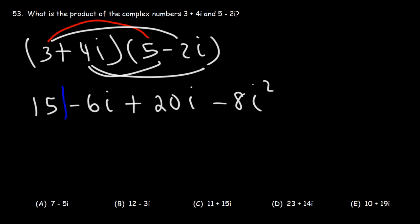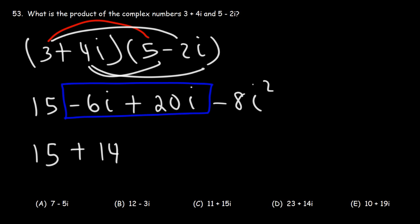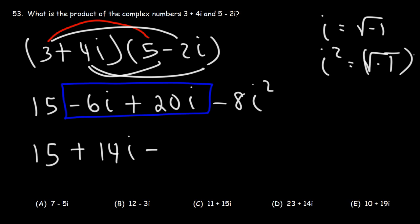Now let's combine like terms. Negative 6i plus 20i is going to be 14i. For i squared: i is the square root of negative 1, so i squared is negative 1. Therefore negative 8i squared is negative 8 times negative 1, which becomes positive 8.